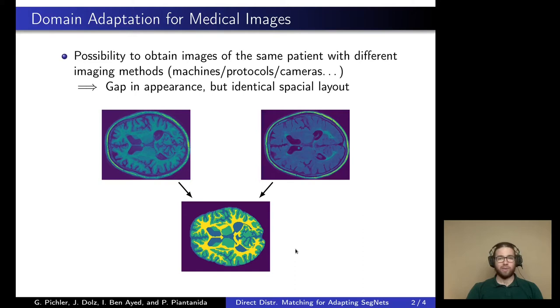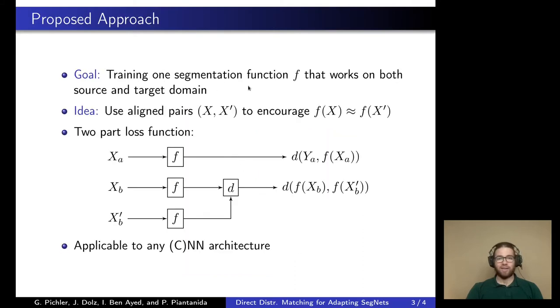For example, this can be achieved by imaging the same patient multiple times. We exploit this fact and train only one segmentation function that works on both the source and target domain by using these aligned pairs to encourage our network output to be similar across domains. We use a two-part loss function where